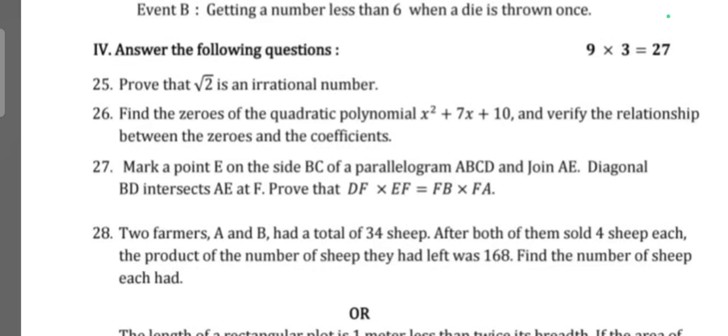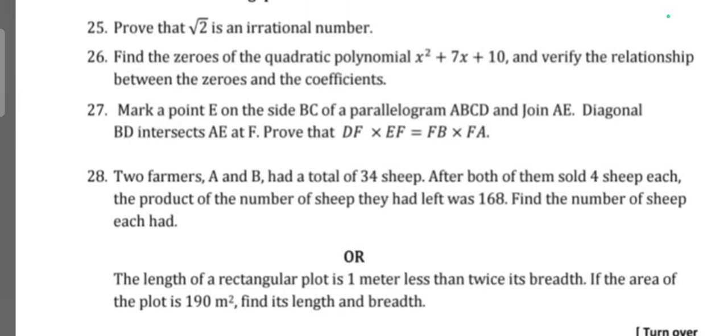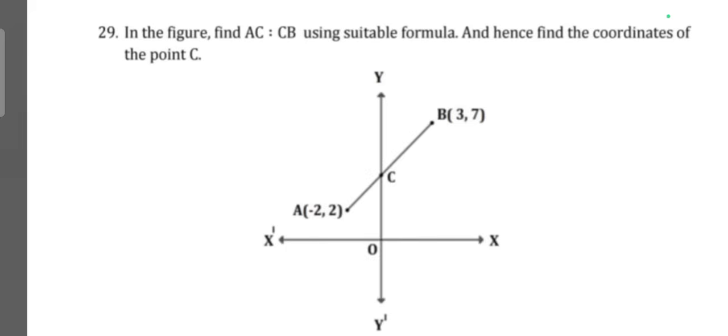Answer the following questions for two to three mark questions. Prove that root 2 is an irrational number. Find the zeros of the quadratic polynomial x square plus 7x plus 10 and verify the relationship between zeros and coefficients. Mark point E on side BC of parallelogram ABCD and join E to diagonal BC intersect at F. Prove that DF into EF is equal to FB into FE. Question 28: Two farmers A and B had a total of 34 sheep. After both of them sold 4 sheep each, the product of the number of sheep they had left was 168. Find the number of sheep each had.